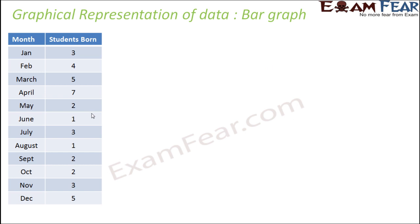Let's start with the bar graph. A bar graph is a pictorial representation of data in which we use bars. We use bars of equal spacing and uniform width — though that is not strictly required. The bars are drawn on one axis, typically the x-axis for the variable, and the value of the variable is depicted on the y-axis — that is, the height of the bar.